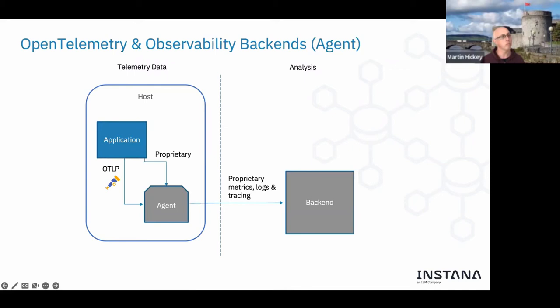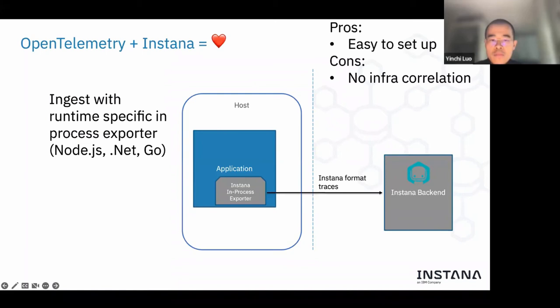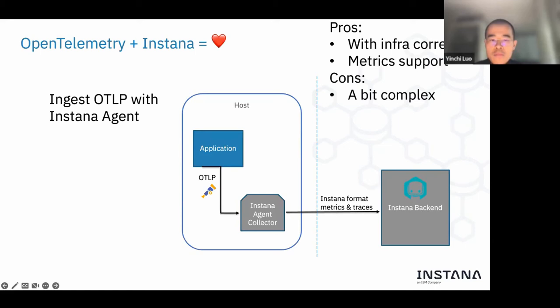Being vendor agnostic means you can use one or many different backends. In Instana, we support OpenTelemetry early on to support our customers' journey. We make our Instana agent compatible with the OpenTelemetry Collector, which means it can directly ingest OpenTelemetry format metrics and traces, translate them to the Instana format, and send them to the Instana backend. Because the Instana agent knows which application sends the data, it can also perform infrastructure correlation, and it supports OpenTelemetry metrics ingestion in this model as well.